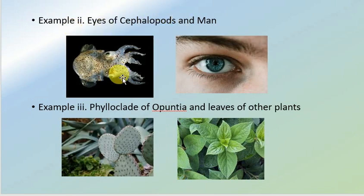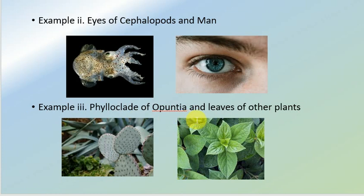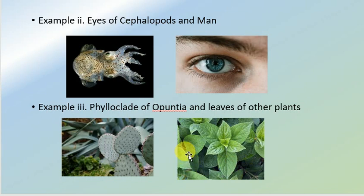The second example is the eyes of cephalopods and eyes of humans. They perform the same function of vision, but the tissues from which they originated are different. The third example is the phylloclade of opuntia and leaves of other plants. Both perform photosynthesis, but the tissues from which they arise are different.